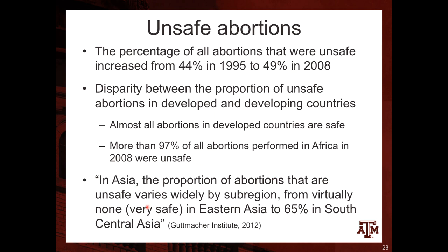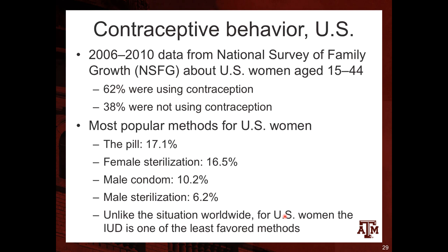In Asia, the proportion of abortions that are unsafe varies widely by sub-region — from virtually none in Eastern Asia to 65% in Southeast Asia. In the case of contraceptive behavior in the US, using data from 2006 and 2010 from the National Survey of Family Growth (NSFG), this data relates to US women between the ages of 15 to 44.